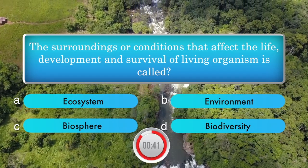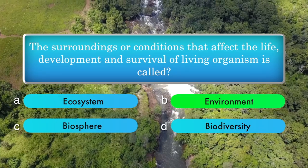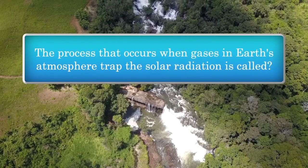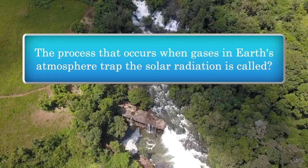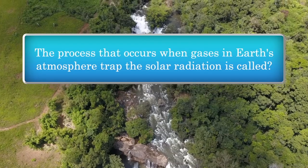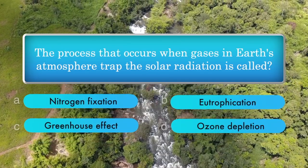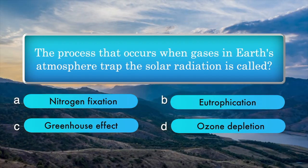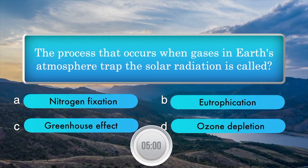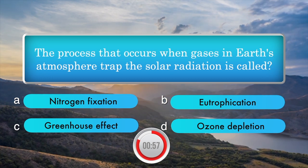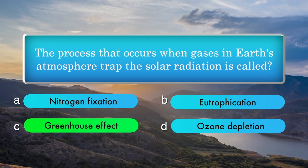Answer is environment. The process that occurs when gases in Earth's atmosphere trap the solar radiation is called — options: nitrogen fixation, eutrophication, greenhouse effect, ozone depression. Answer is greenhouse effect.